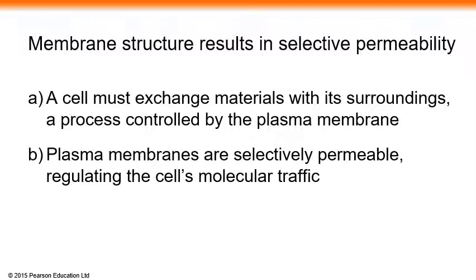The membrane structure results in selective permeability. A cell must exchange material with its surroundings, a process controlled by the plasma membrane. Plasma membranes are selectively permeable, regulating the cell's molecular traffic.